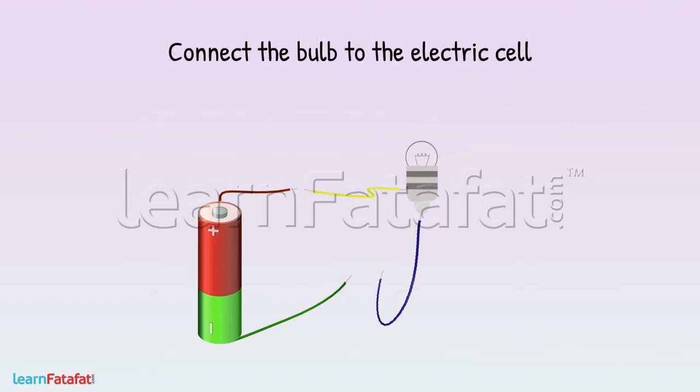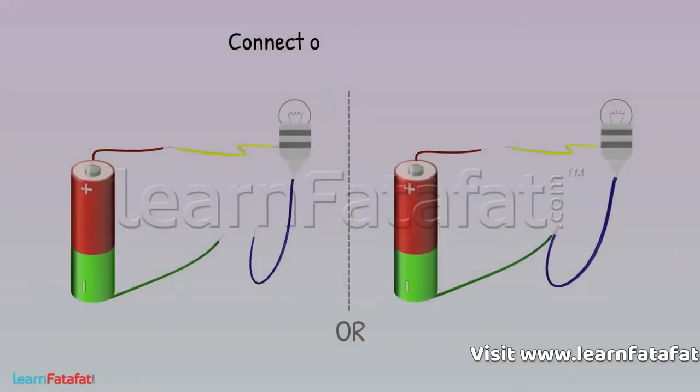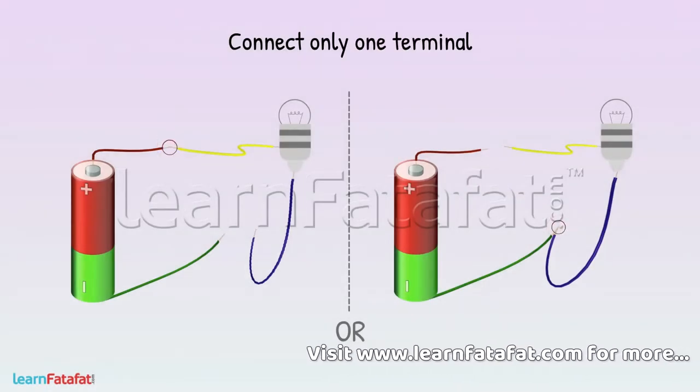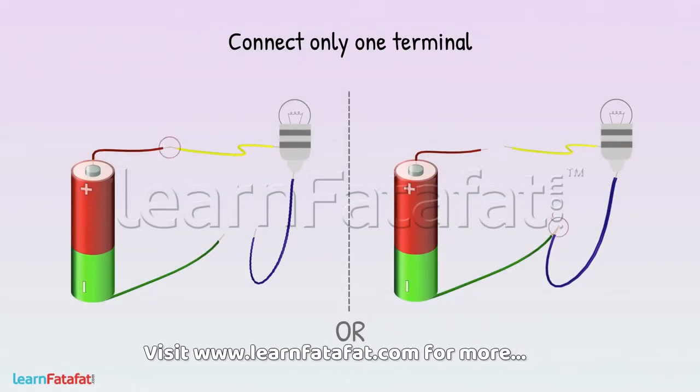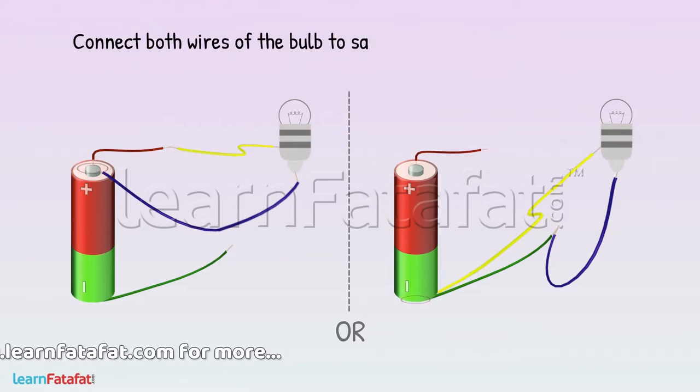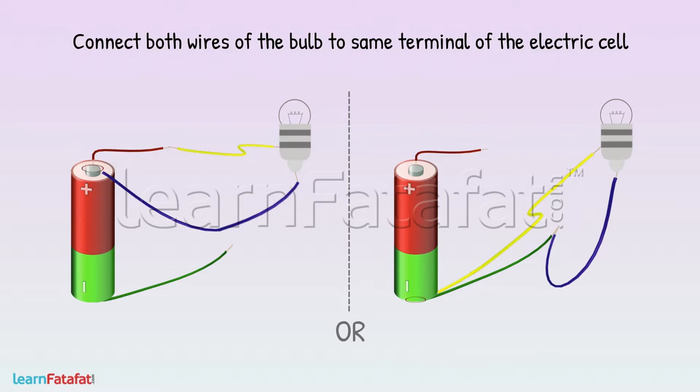Let's connect the bulb to the electric cell. The question is, how can we do that? If we connect only one terminal, the bulb won't light up. If we connect both wires of the bulb to the same terminal of the electric cell, still the bulb won't light up.